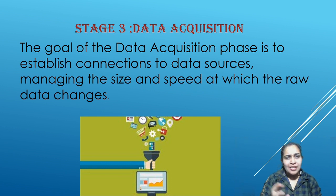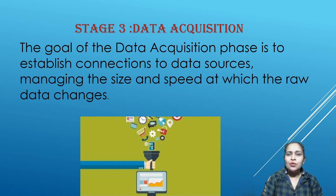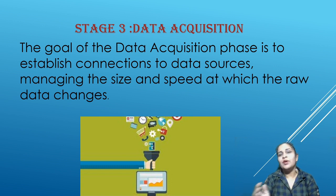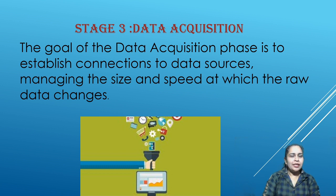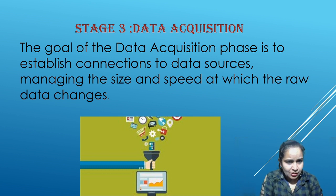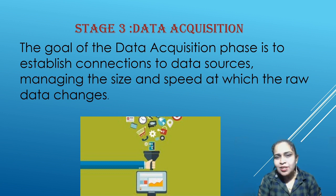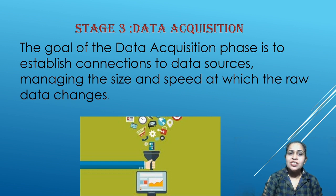Next comes data acquisition, which is the third stage of the AI project cycle. Data acquisition is basically acquiring or collecting data, and establishing connections to data sources. Data consists of raw facts and figures; once processed, it is converted to information. When collecting data, we should know the sources, which can be of three kinds: primary, secondary, and ternary.